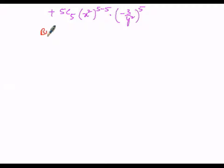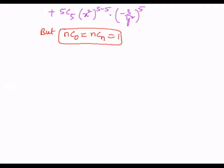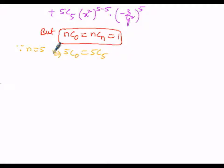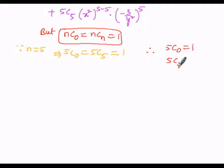We know that nC0 and nCn each equal 1. Since n = 5, we have 5C0 = 1 and 5C5 = 1. The remaining coefficients to find are 5C1, 5C2, 5C3, and 5C4.